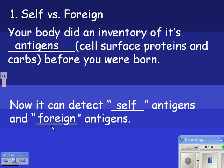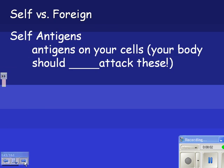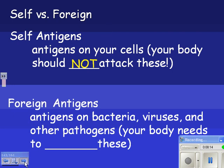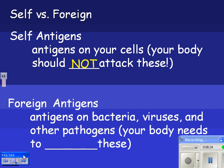A foreign antigen would be on bacteria or viruses. Self antigens are antigens on your own cells — your body should not attack these. Think of antigens as ID tags: 'you belong to me, better not fight you.' Foreign antigens are on bacteria, viruses, worms, and other pathogens — things that cause diseases — and your body needs to fight these.